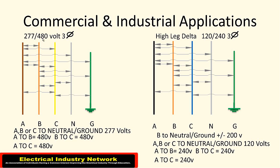This one is 277/480. So between the phases, A to B, B to C, you're going to get 480 volts from each one of the phases. A, B, C to neutral, you'll get 277 volt.